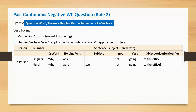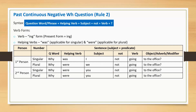First person plural: Why were we not going to the office? Second person singular: Why were you not going to the office? Second person plural: Why were you not going to the office?